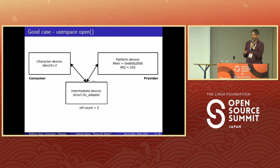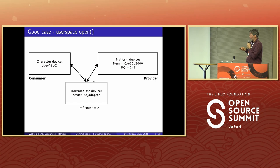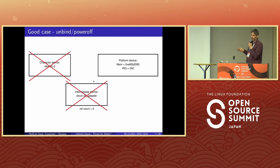Let me emphasize first: this is not saying Linux is totally broken — it is not. In most cases Linux does a very good job. But as we approach safety certification, we really need to get more corner cases right, especially the ones we already know about. In the good case, a consumer from user space connects to this device, ref count goes to two, then when finished it disconnects, ref count goes to one, and when the device goes away ref count drops to zero — everything's good.